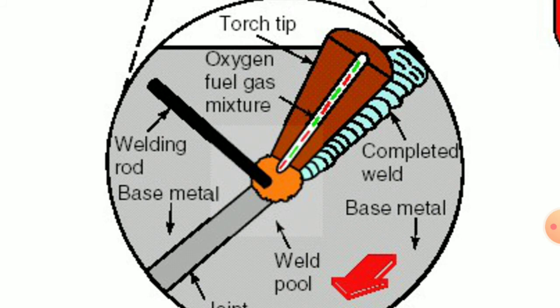A welding rod or filler rod material can be used — it is optional, but if the thickness of the metal to be welded is high, it must necessarily be used. In this figure you can see the torch tip from which the oxy-acetylene gas mixture emerges. The completed weld is shown in sky blue color. One major disadvantage of this process is spatter loss or carbon deposition over the welded region.